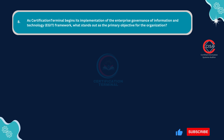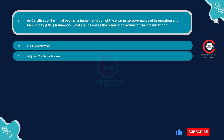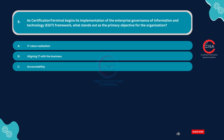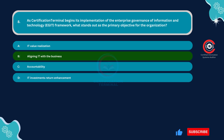Question number eight: As Certification Terminal begins its implementation of the enterprise governance of information and technology (EGIT) framework, what stands out as the primary objective for the organization? Option A: IT value realization. Option B: Aligning IT with the business. Option C: Accountability. Option D: IT investments return enhancement. The correct answer is Option B — aligning IT with the business.